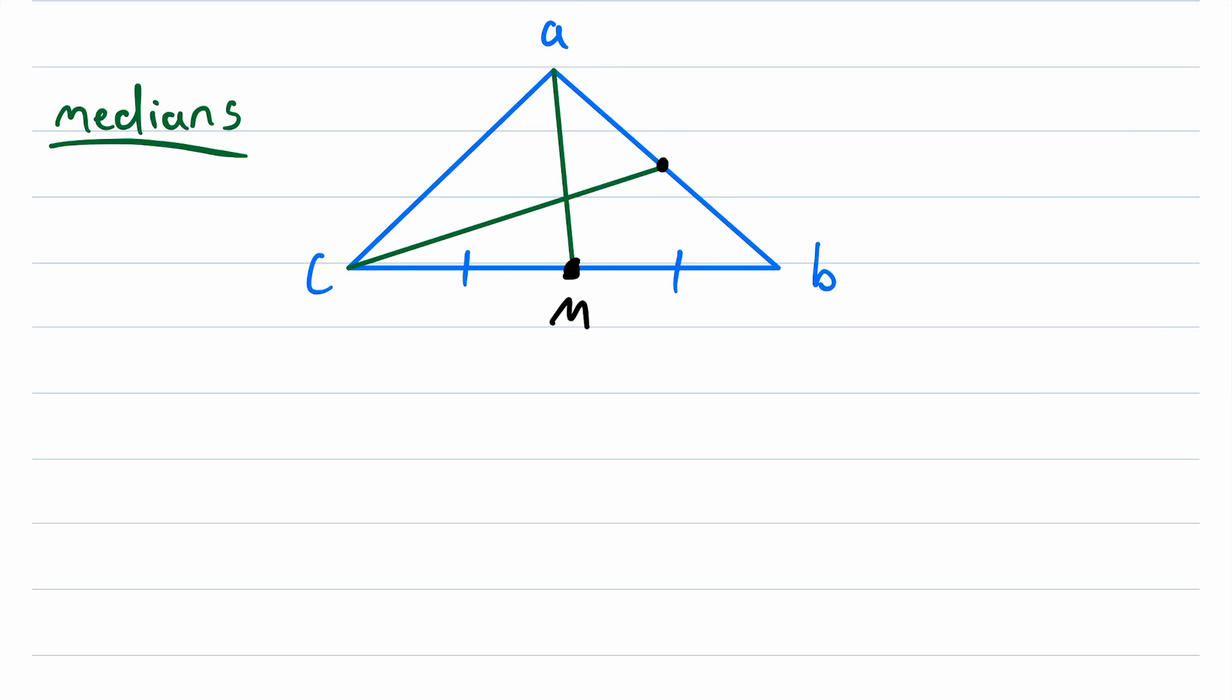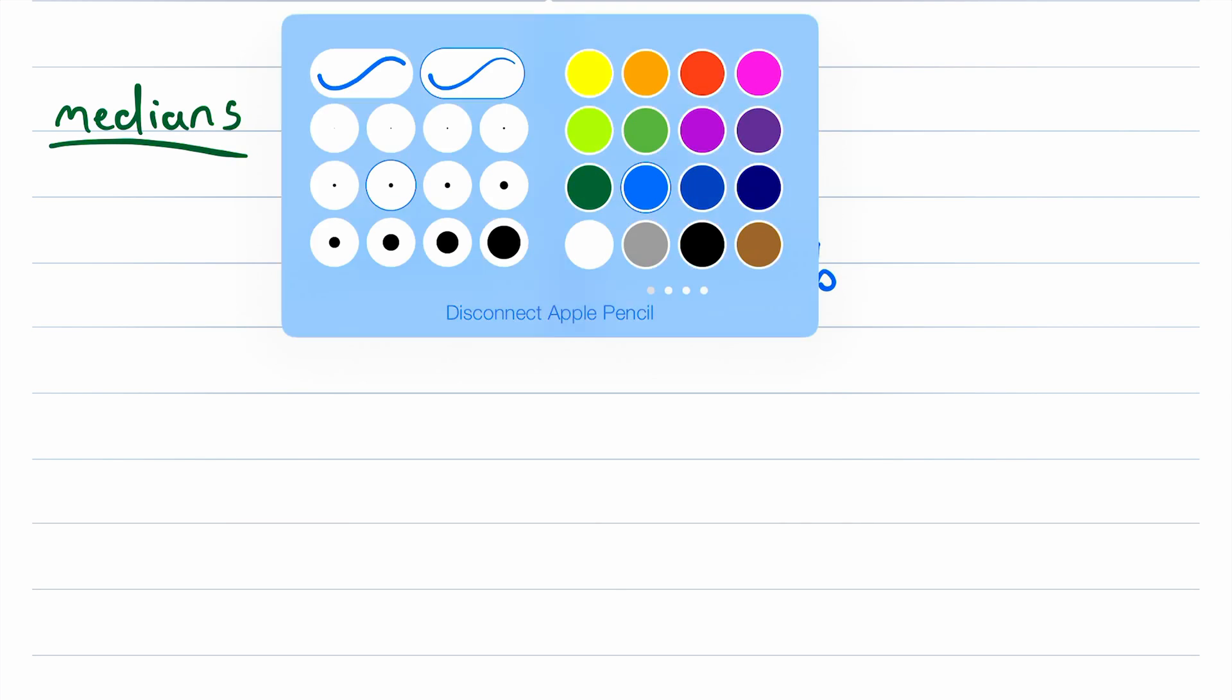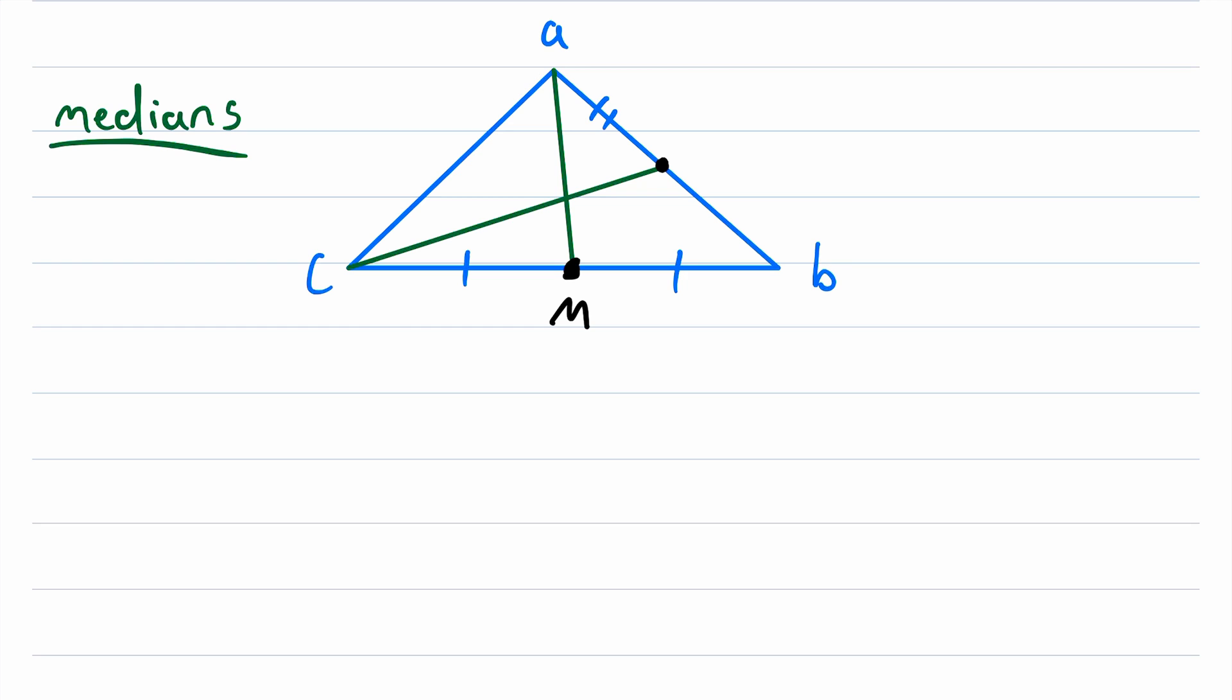So we can put a point over here. I won't bother giving it a name. And we know that this line segment is congruent to this line segment. This is congruent to this. And again, that's because this median bisects this side.